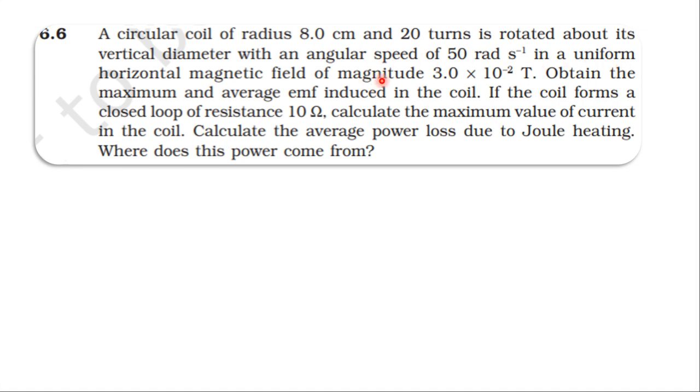in uniform horizontal magnetic field of magnitude 3 into 10 power minus 2 tesla. Obtain the maximum and average EMF induced in the coil. If the coil forms a closed loop of resistance 10 ohm, calculate the